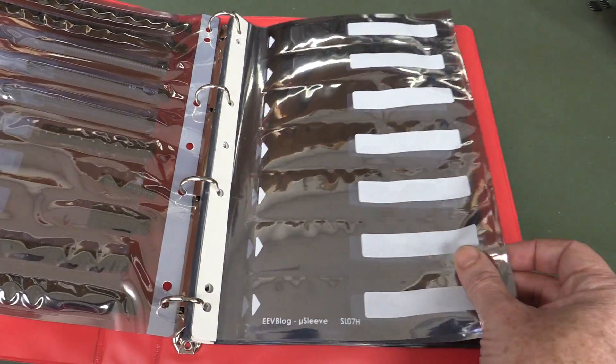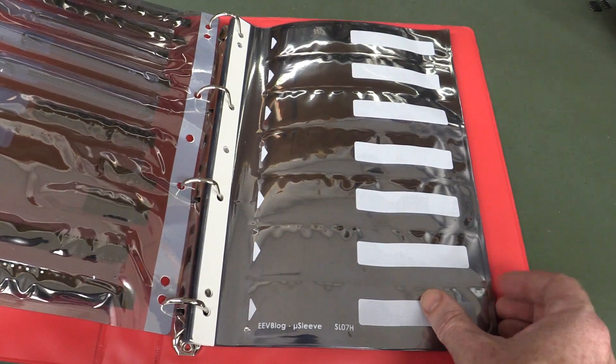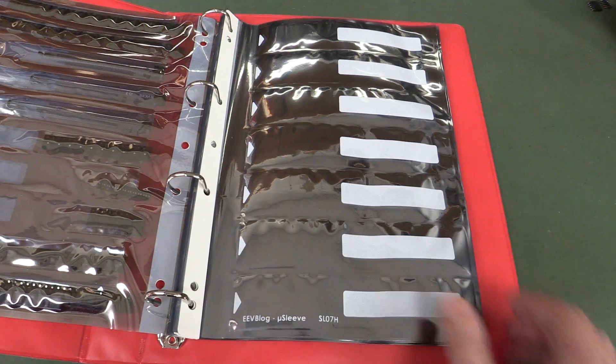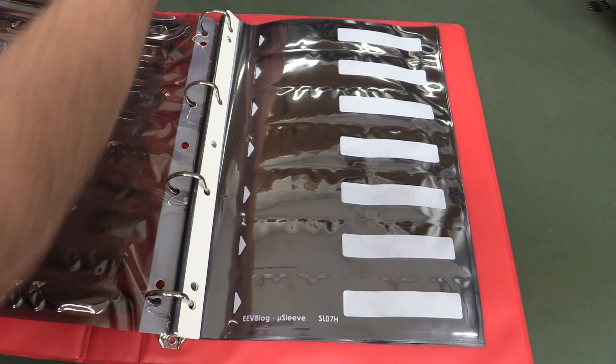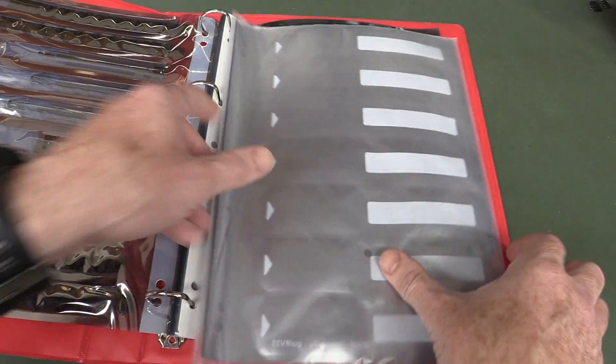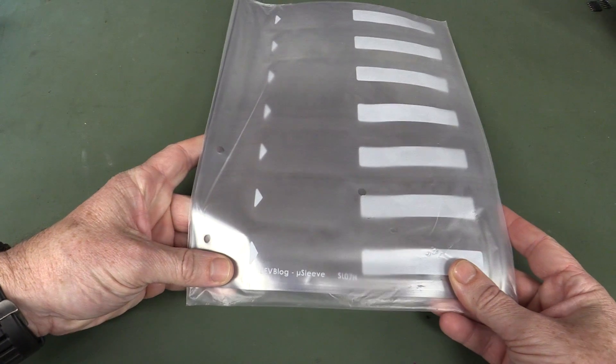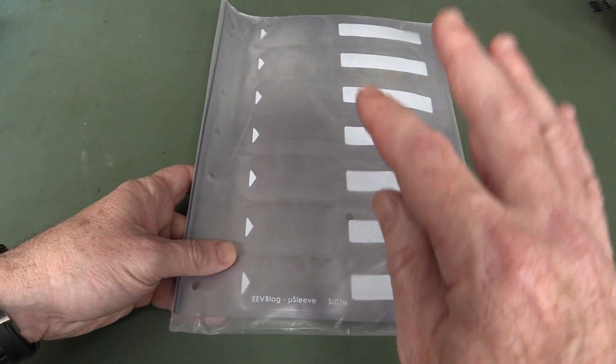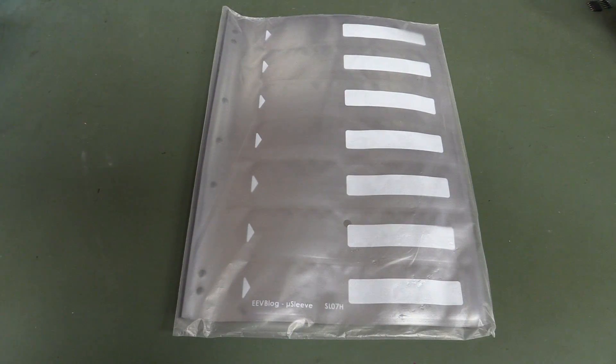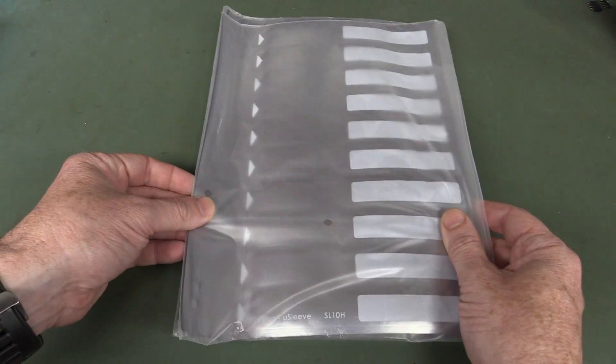Anyway I was going to do a crowdfunding campaign, but now nah, I've just whacked it on the website. And by the way, they actually come in packets of 10 like this, so if you order it, you'll get a packet of 10 of the larger ones and a packet of the 10 smaller ones like this.